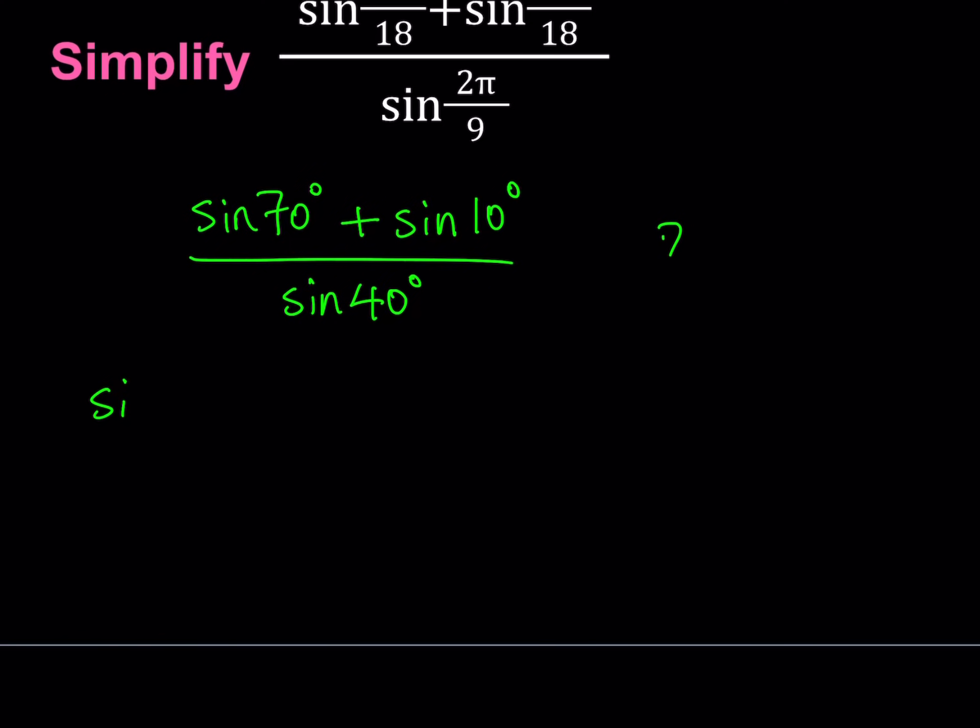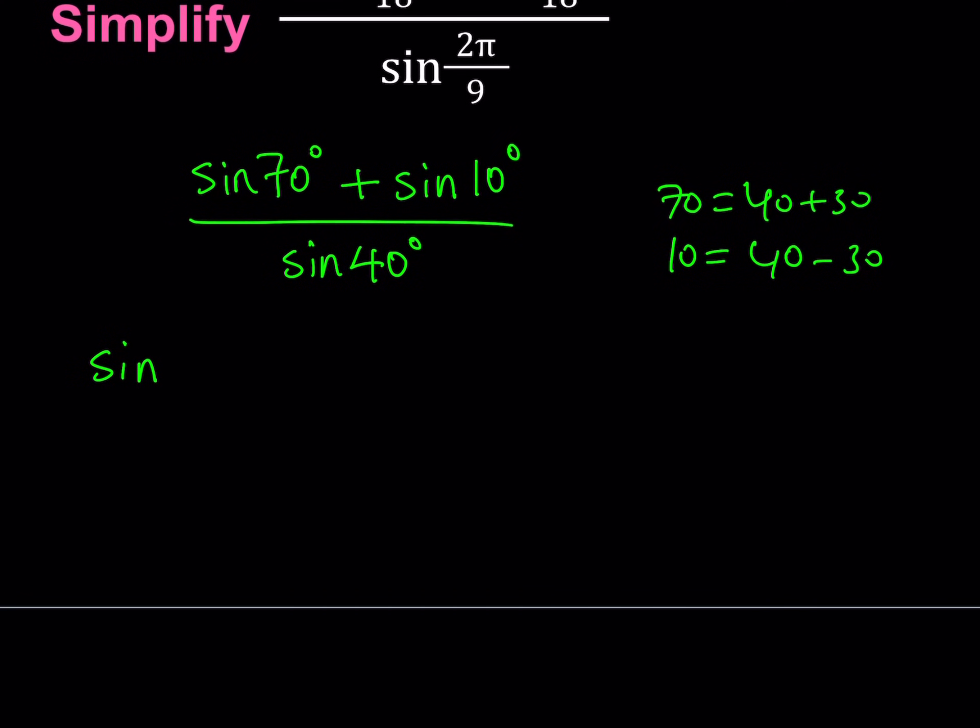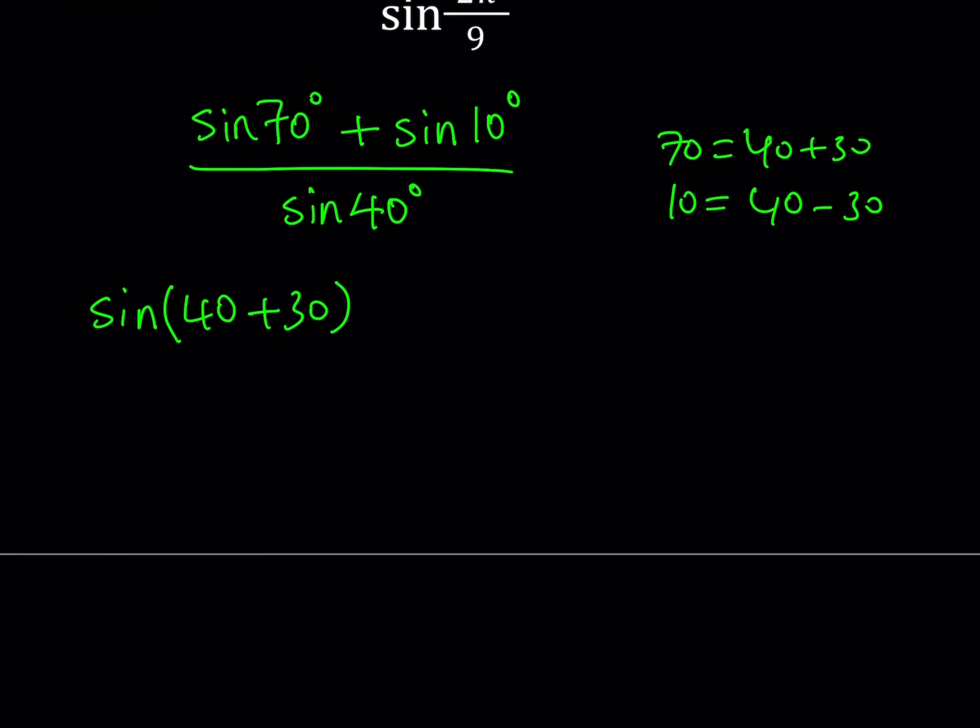Why? Because 70 can be written as 40 plus 30, and 10 is 40 minus 30. This works because of the average being 40. So let's go ahead and write the 70 degrees as 40 plus 30. From now on, I'm not going to use the degree symbol, because everything is in degrees.